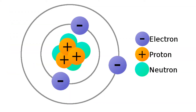We might as well start from the basic building blocks of our universe: atoms. Recall that all matter in the universe — everything that has mass and takes up space — consists of atoms. And atoms themselves consist of three types of subatomic particles: positively charged protons, negatively charged electrons, and non-charged neutrons.